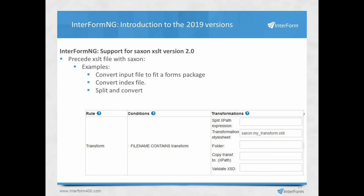Interform NGE uses stylesheets. They can be used to completely change the contents of an input XML file before merging it with a template. Stylesheets can be used in combination with a split so you can copy header information into smaller XML files, or for generating a new XML file that fits requirements like the German SUGFAT standard. Normal stylesheets are limited to XSLT version 1.0 functionality, but with the special prefix 'Saxon:' you can tell Interform NGE to allow the full functionality of the Saxon XSLT version 2.0 distribution.